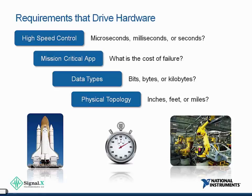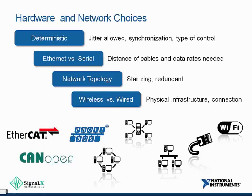Hardware requirements often lead to choices about both the hardware you'll implement and the network topology you'll put in place. How deterministic does your network need to be? This often comes down to how synchronized the various nodes need to be in your system — does each node need to share a common clock, or is your control system relatively independent so that you don't need a high level of synchronization between nodes?